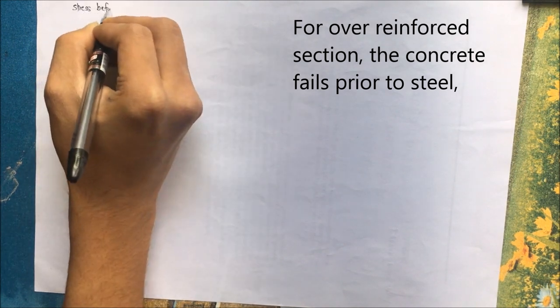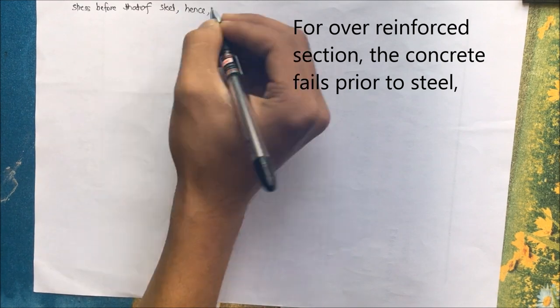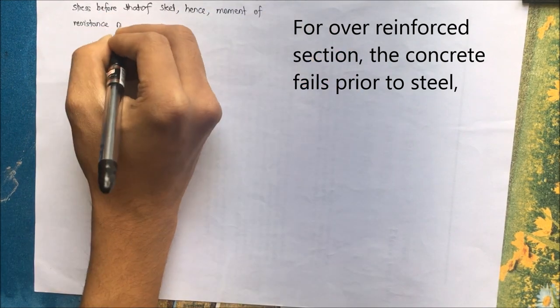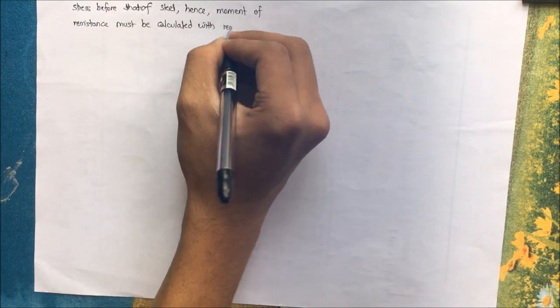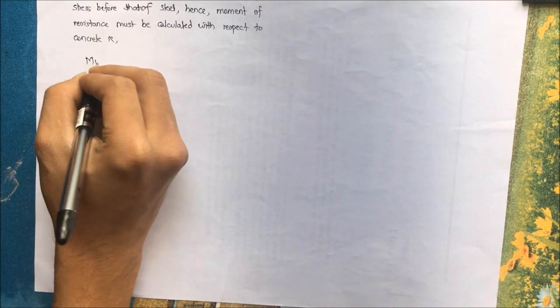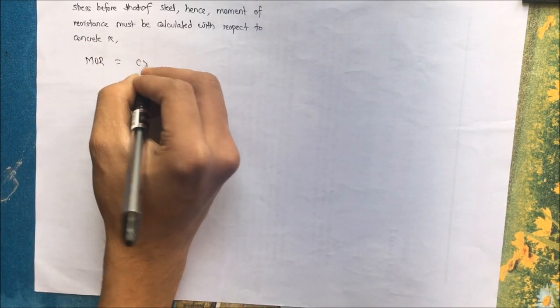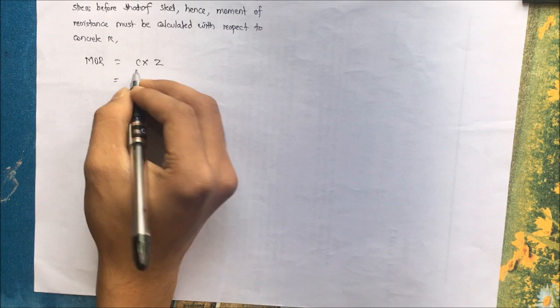For over-reinforced section, the concrete fails prior to that of steel. Hence we consider the moment of resistance to be calculated using the moment of resistance considering the compressive force. Moment of resistance is equal to C into Z, and C being the compressive force.